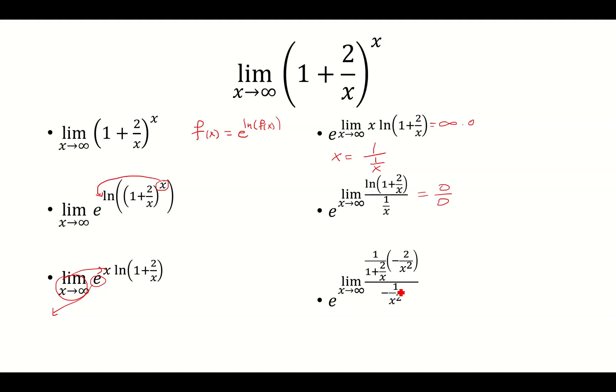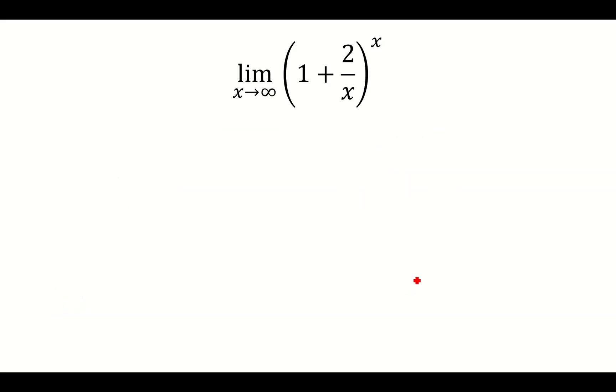So a bunch of things are going to cancel. First, the negative x squared. So we have 2 over 1 plus 2 over x. As x approaches infinity, this goes to 0. And we're left with e squared as our limit.